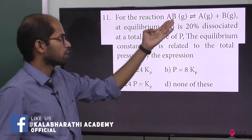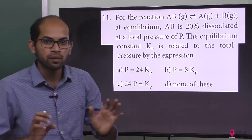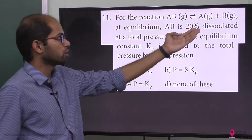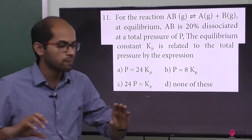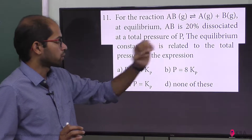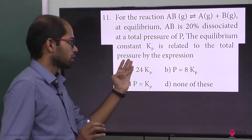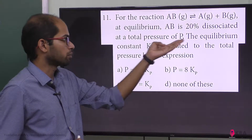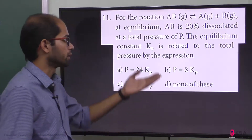Total pressure is the sum of partial pressures of AB, A, and B compounds, all in the gaseous state. The equilibrium constant Kp is related to the total pressure P by the following expression.